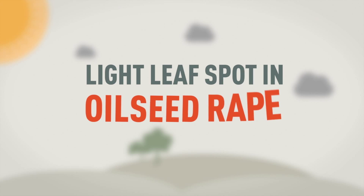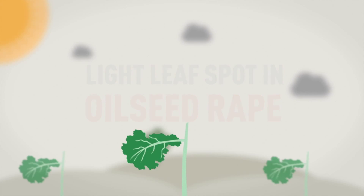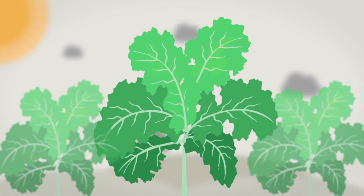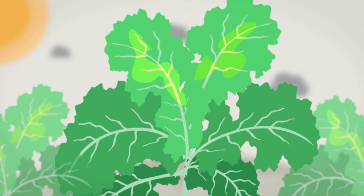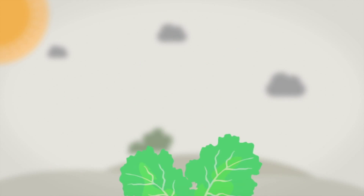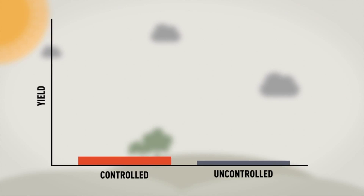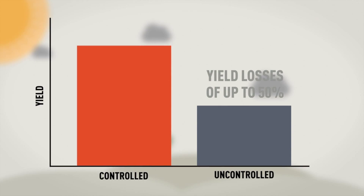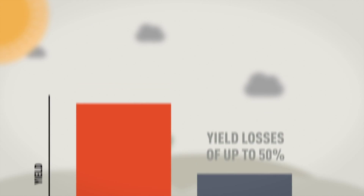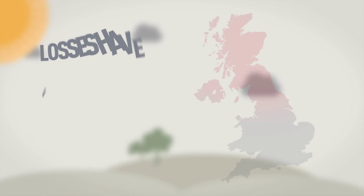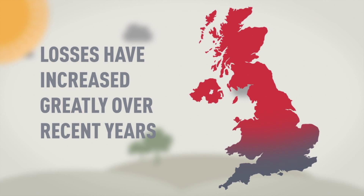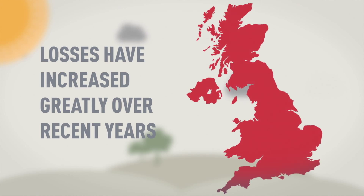Lightleaf spot in oilseed rape. Lightleaf spot is a polycyclic disease which affects all parts of the oilseed rape plant including leaves, stems and pods. If left uncontrolled, lightleaf spot can result in yield losses in rape crops of up to 50%. The losses to lightleaf spot have increased greatly over recent years, resulting in it being the number one disease in rape.